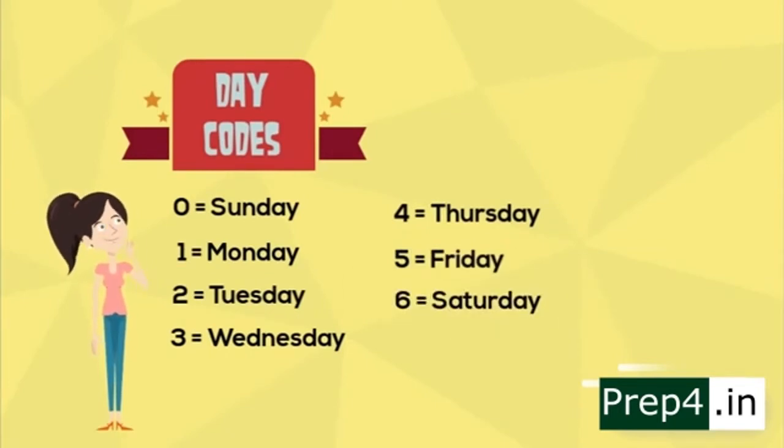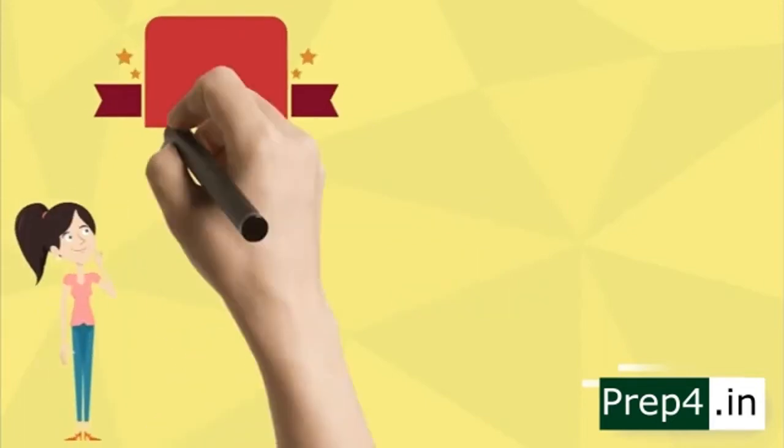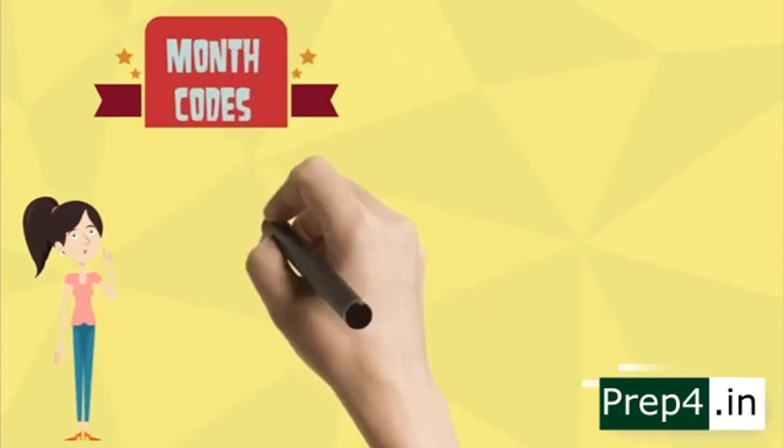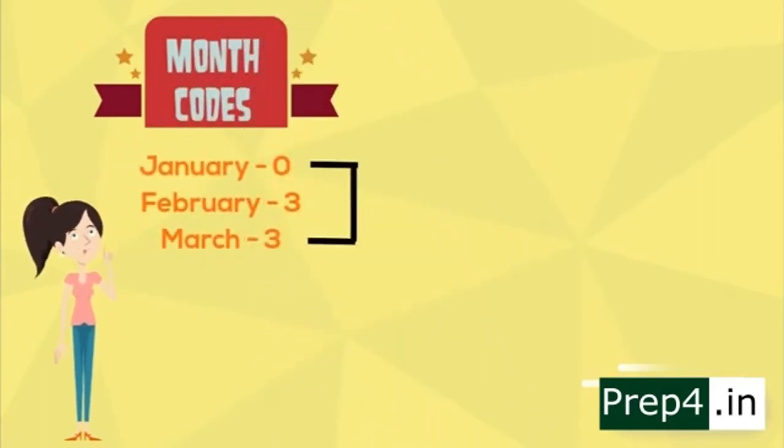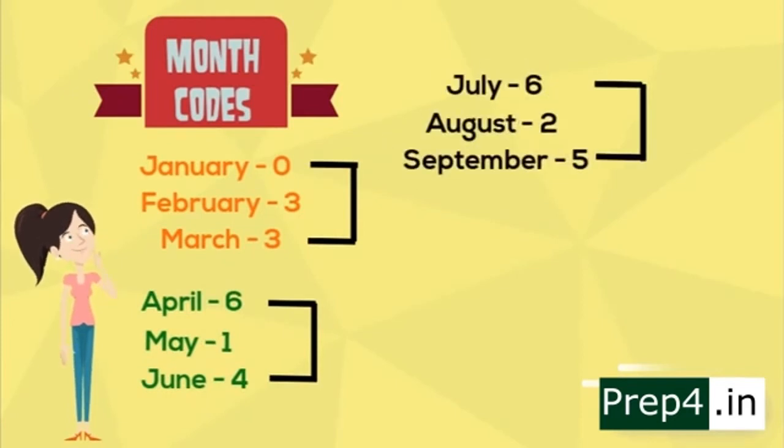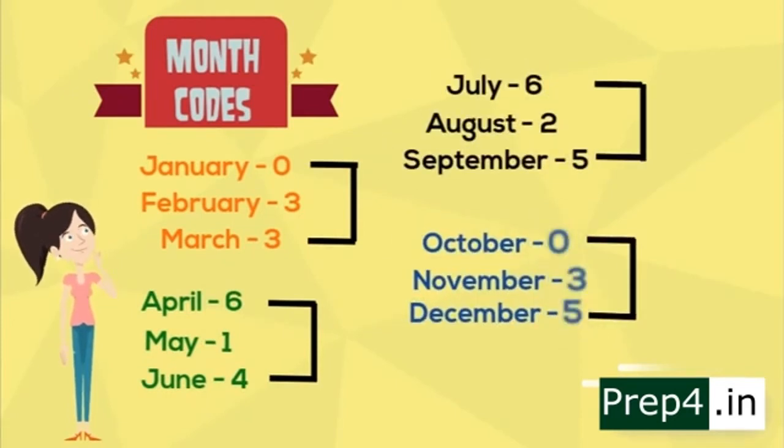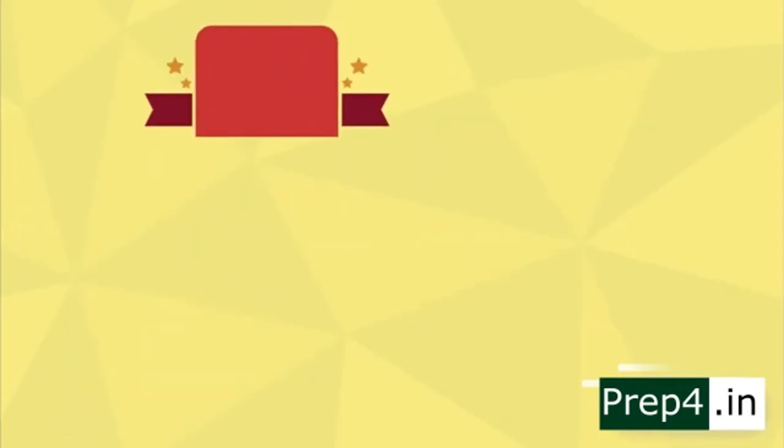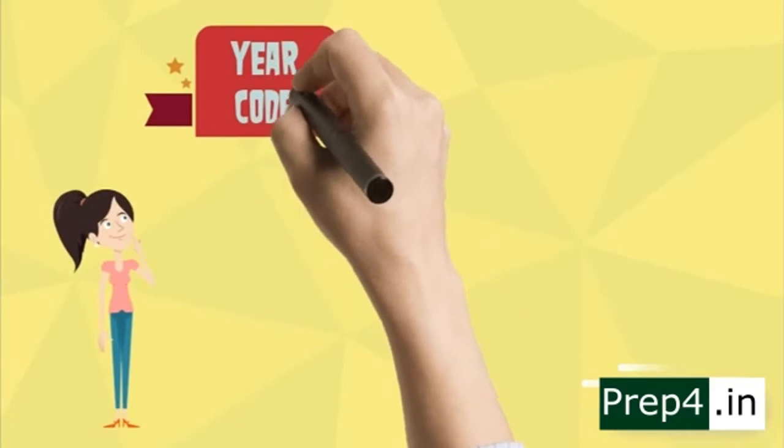After coding the days of the week, similarly do the same with months from January to December. We are going to code each and every month with a number and then split it into three months. We will have four groups. So the number for the first group is 033, second is 614, third is 625, and the last is 035.